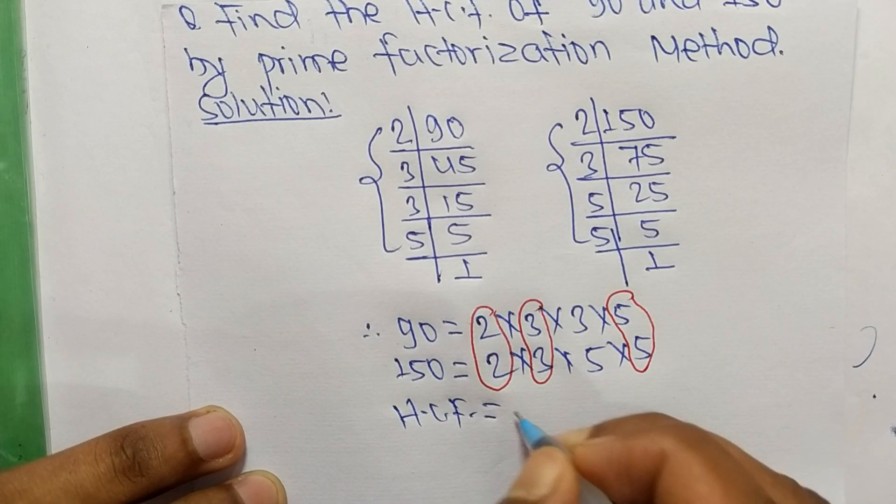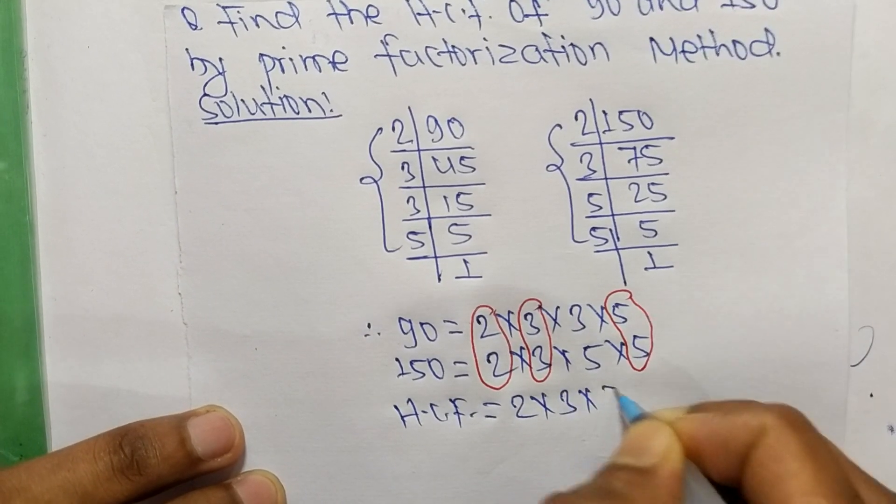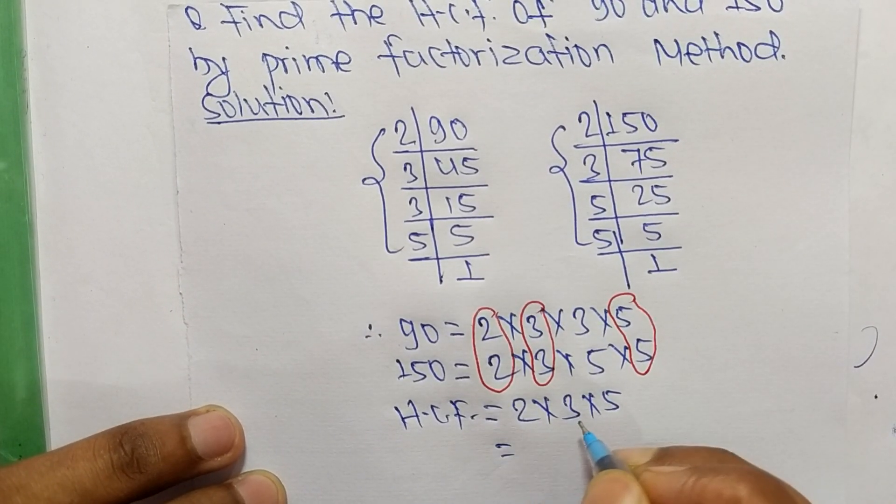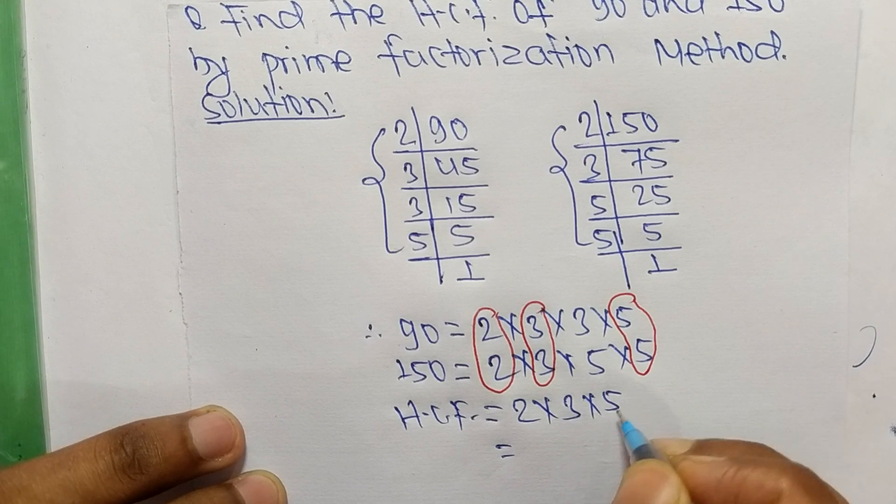The common factors here are 2, 3, and 5. So 2 times 3 means 6, and 6 times 5 means 30.